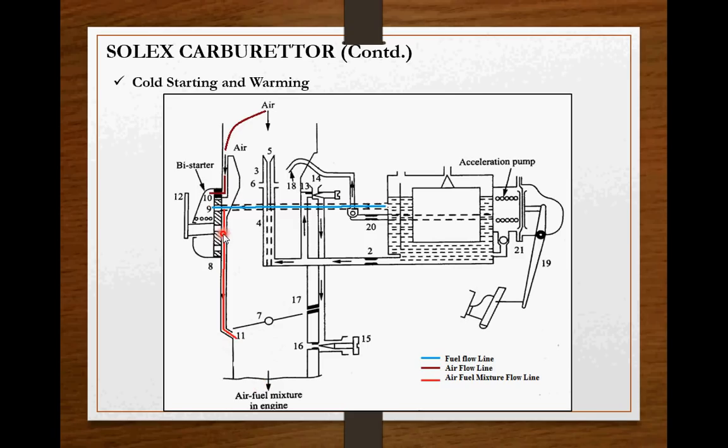Once your engine gets started, this 12 number lever is released by the driver. Thus this disc gets rotated and smaller diameter hole gets engaged with the fuel line. Once the diameter of hole is reduced, the amount of fuel coming inside the bystarter gets reduced but the amount of air coming inside is again same. So you have more amount of air, less amount of fuel. That means you have a lean mixture as compared to previous. And this mixture is again supplied to the engine during warming condition. These are the two circuits used for cold starting and warming.